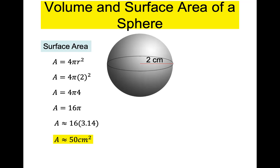By the way it's surface area, so the answer is in square units. Now for volume — what's the only thing we need? The radius. Plug that in and you're done. Type this in exactly the way it appears and don't hit enter yet — I want to look at your calculator. I did this for my seventh graders and they couldn't wrap their head around it.